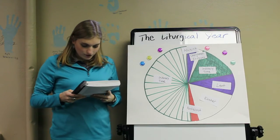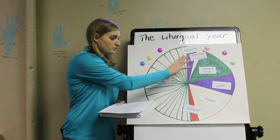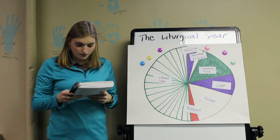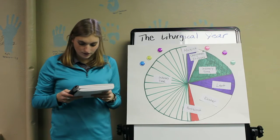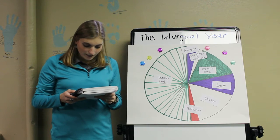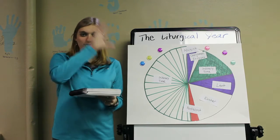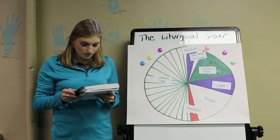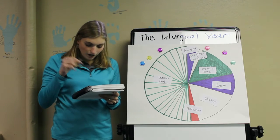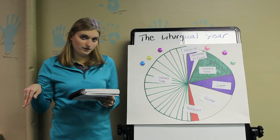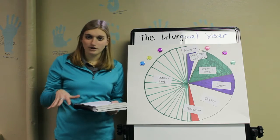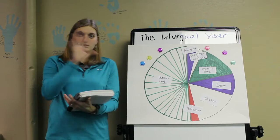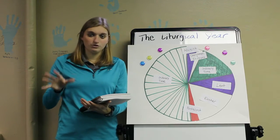The Easter cycle is the oldest of the two church cycles. It's composed of Lent, Easter, and Pentecost. It is rooted in the Jewish feasts of Passover and Pentecost, and it's based on the lunar calendar, which refers to the moon cycle. So the day of Easter falls on the Sunday after the first full moon on or after March 21. That's why Easter is not on the same day every year, because the moon cycles shift and move year after year.